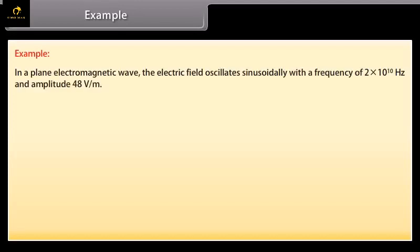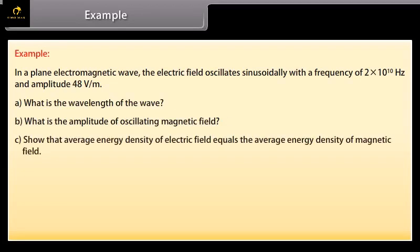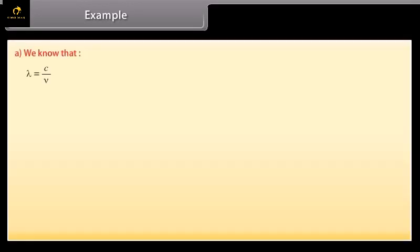Let's take an example of electromagnetic waves. In a plane electromagnetic wave the electric field oscillates sinusoidally with a frequency of 2 into 10 raised to the power 10 hertz and amplitude 48 volt per meter. What is the wavelength of the wave? What is the amplitude of oscillating magnetic field? So that average energy density of electric field equals the average energy density of magnetic field. Let's see the solution. Given values are nu which is equal to 2 into 10 raised to the power 10 hertz. E0 equals 48 volt per meter. We know that lambda is equal to C upon nu by putting and calculating the values we get wavelength of the wave which is equal to 1.5 into 10 raised to the power minus 2 meter.